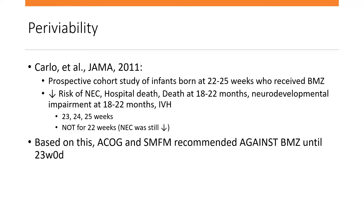In 2011, there was a really nice prospective cohort study of all infants born at 22 to 25 weeks who all received betamethasone. They stratified all births by gestational week: 22, 23, 24, 25 weeks. They found a very significant decreased risk of NEC, hospital death, death at 18 to 22 months, neurodevelopmental impairment at 18 to 22 months, and IVH — and that was significant for fetuses born at 23, 24, and 25 weeks. But when they looked at the 22-week cohort, there was no difference; NEC was still decreased, but nothing else was, including mortality.